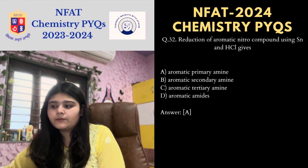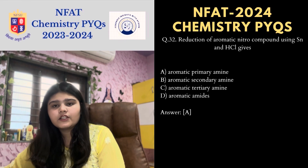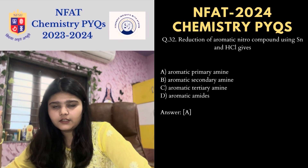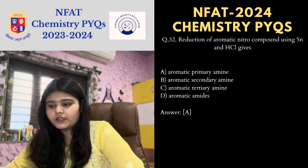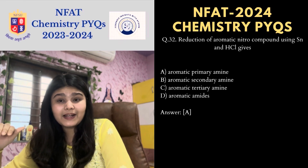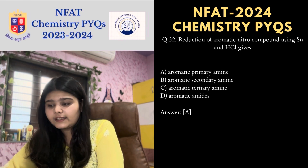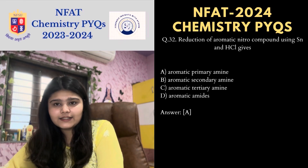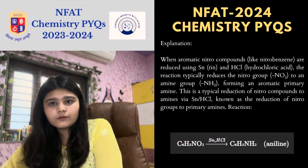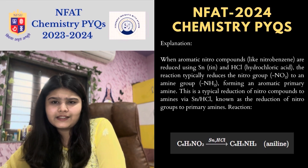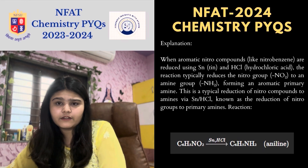Next MCQ: reduction of an aromatic nitro compound using Zn and HCl gives aromatic primary amine. Please practice these reactions and the textbook exercise questions which are given, so you recognize the answer when you see the options.